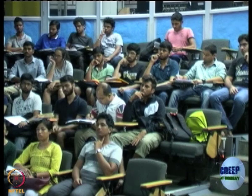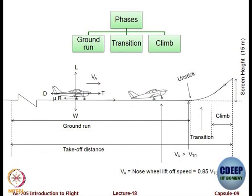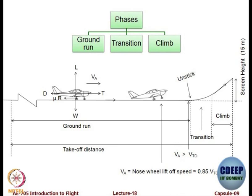After rotation, which is still on the ground, the aircraft enters the transition phase and finally the climb phase. The distance from the starting point to where all wheels leave the ground is called the ground run or takeoff ground roll (TOGR). There is also a speed called the unstick speed associated with the point of liftoff.